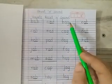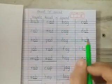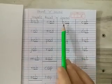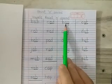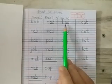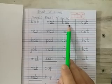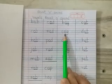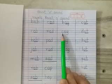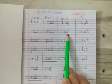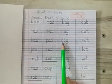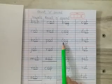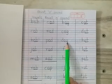Let's start with OG words. B says B, O says O, G says G — Bog. C says C, O says O, G says G — Cog. D says D, O says O, G says G — Dog.